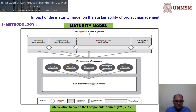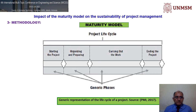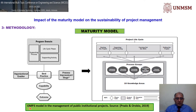This is the interrelation between the components. In 2017, the project life cycle phases were: starting the project, organizing and preparing, carrying out the work, and ending the project — these are the generic phases. This is our OPM3 model in the management of public institutional projects, showing the relation between the program domain and the project life cycle.